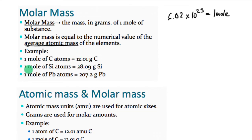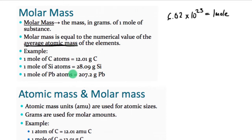If we do the same thing for silicon — counting Avogadro's number of particles and putting them on a balance — we find that the molar mass turns out to be 28.09 grams for silicon. This can be very confusing because we use that number 12.01 for carbon as the atomic mass, so you have to be careful with the differences between atomic masses and molar masses.